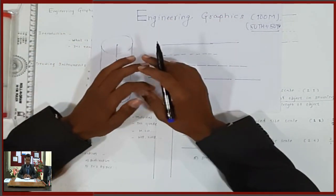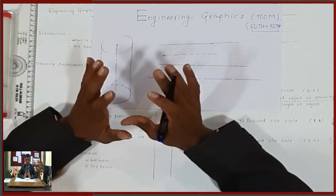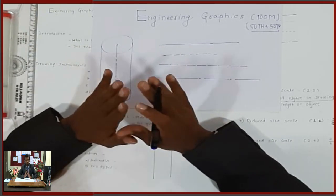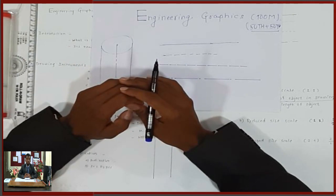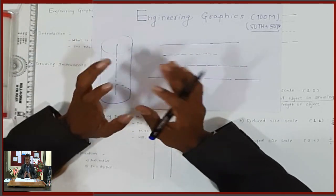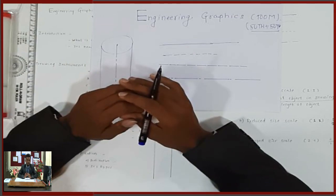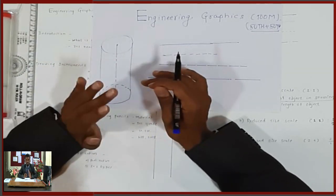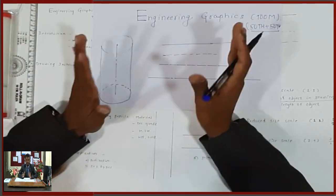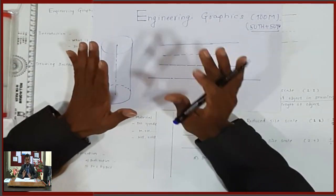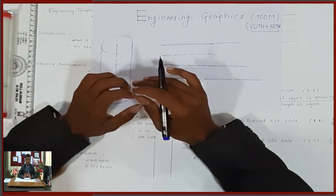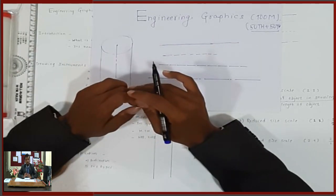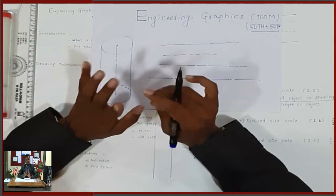Scale means enlargement or reduction of an object. For example, in civil construction — like drawing a floor plan of a building — we cannot draw the actual dimensions on paper. So we use reduction. There are three types of scale: full scale, enlargement scale, and reduction scale.